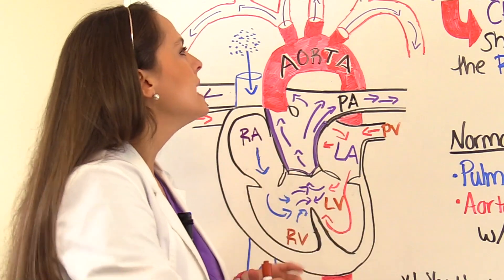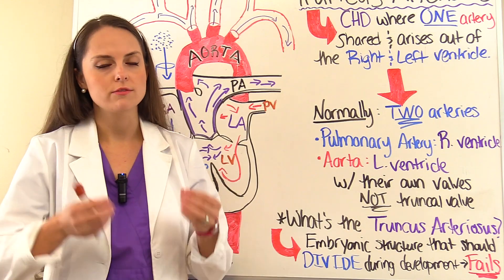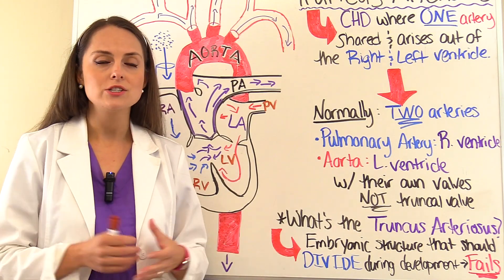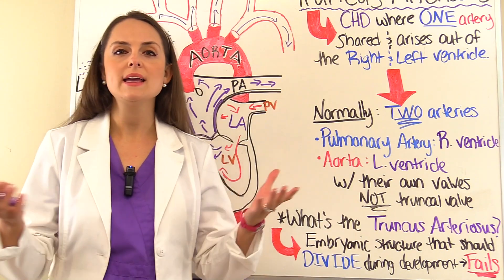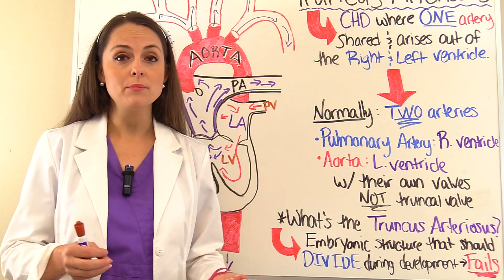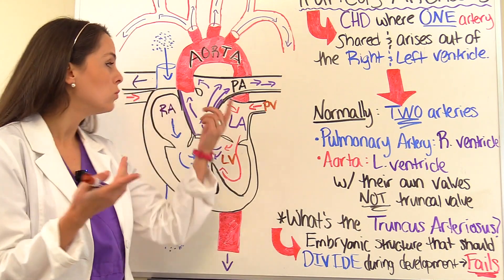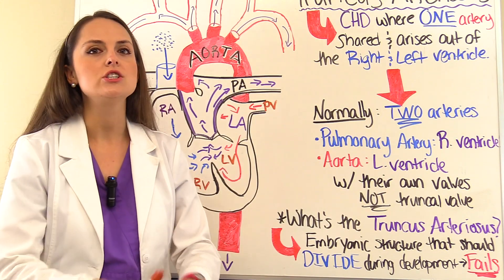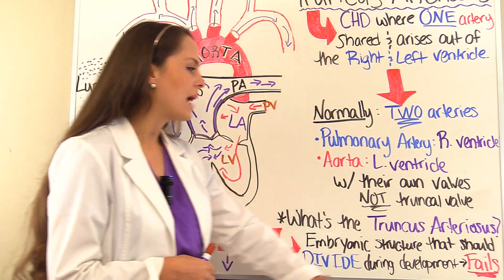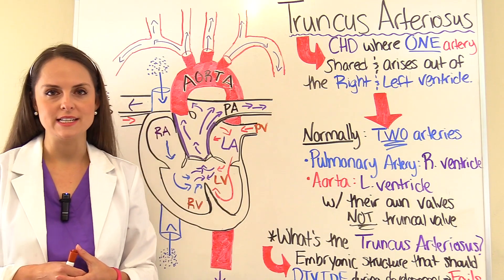That's not good because the body wants fresh oxygenated blood, not a mixture. Now, truncus arteriosus is actually a real embryonic structure — normally it starts out as one structure but later during development it should divide into the pulmonary artery and the aorta. In this heart defect, that division absolutely fails to happen, which is why we have this condition.